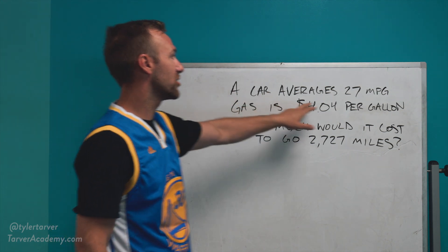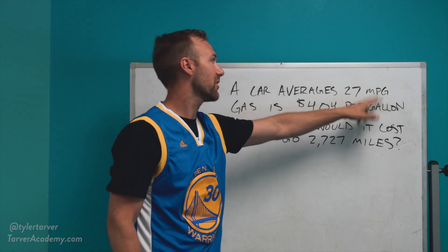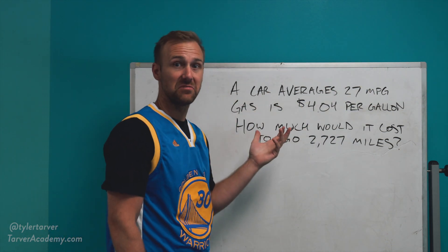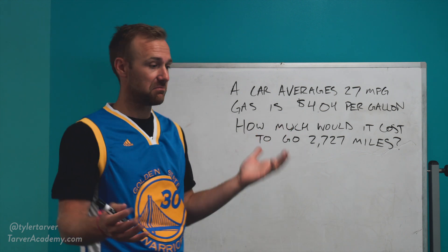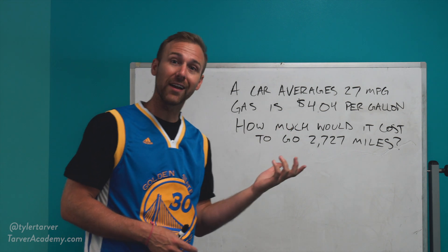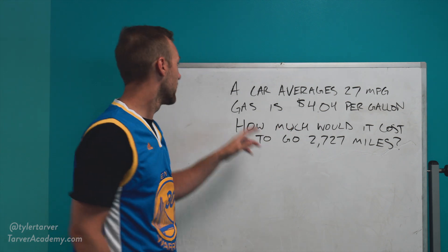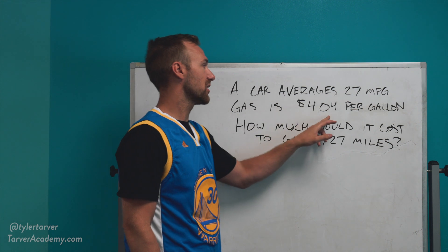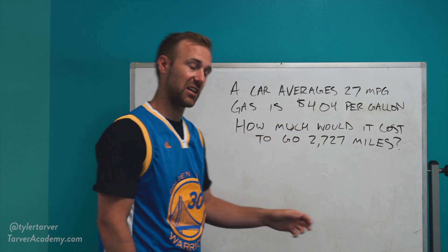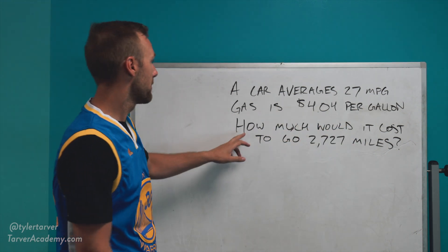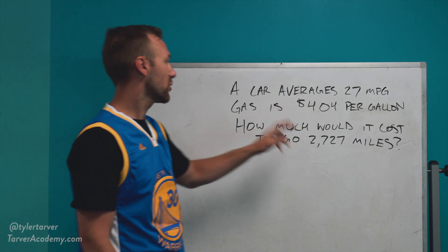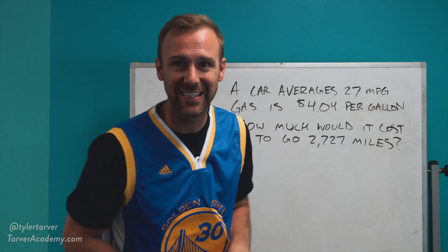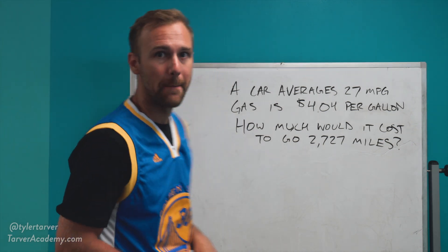It says: a car averages 27 miles per gallon — that's not bad, kind of halfway between a Jeep Wrangler and a Prius. Gas is $4.04 per gallon — kind of high, but whatever. How much would it cost to go 2,727 miles?